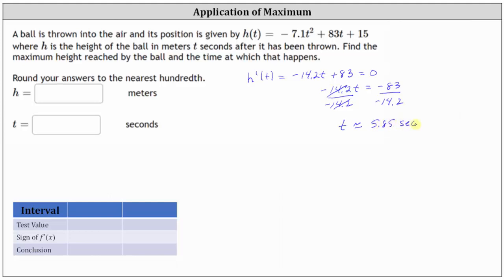Now again, because we know this is a parabola that opens down, this is the time where the ball reaches the maximum height. But if we didn't recognize this, we would have to test the sign of the first derivative to the left and right of this t value to determine whether the height function is increasing or decreasing to the left or right of this time. Let's go ahead and do that.